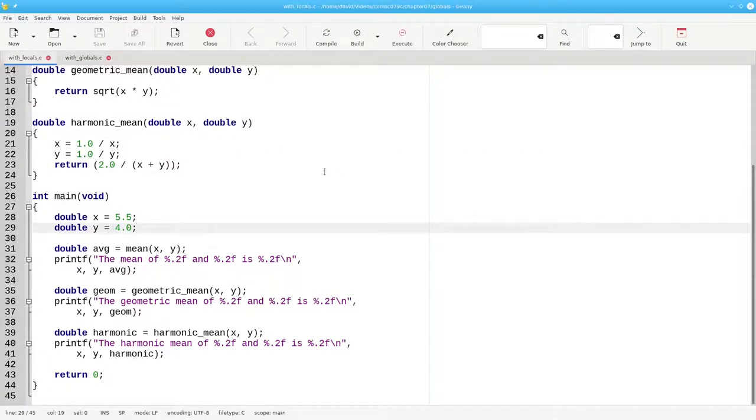This wasn't a problem in the original code, because we were modifying x and y, which were the local parameters, which left the original values of x and y from main totally untouched.